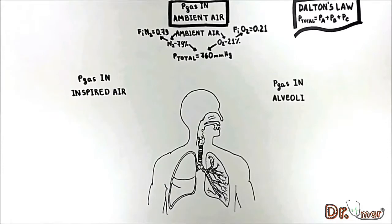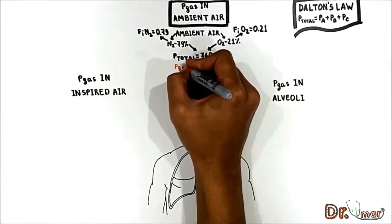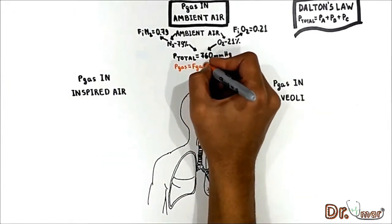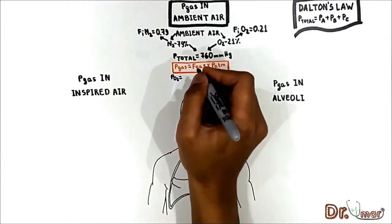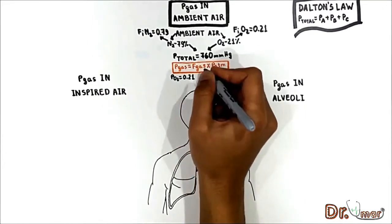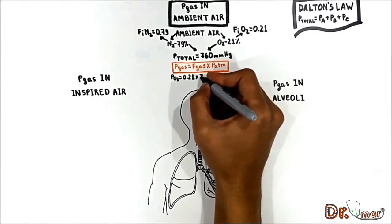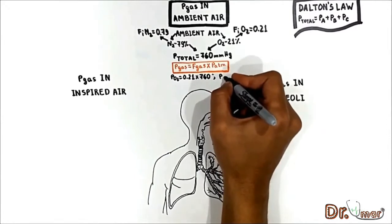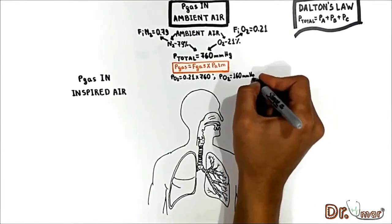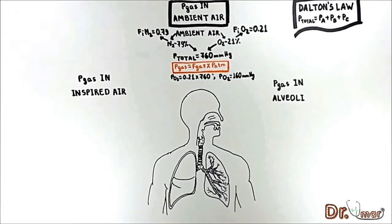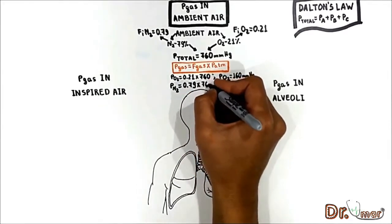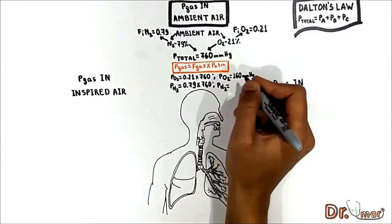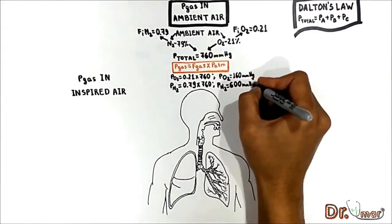In order to determine the partial pressure of any gas in ambient air, we use this formula: the pressure of gas equals fraction of that gas times atmospheric pressure. For example, the PO2 in ambient air equals 0.21 times 760 mmHg, which gives us 160 mmHg. The PN2 in ambient air equals 0.79 times 760 mmHg, which gives us 600 mmHg.